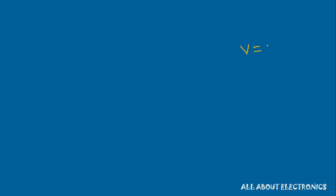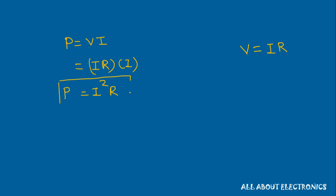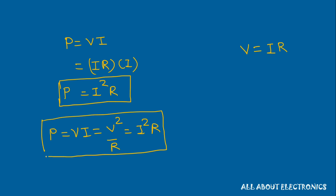We also know that voltage can be written as V = I × R according to Ohm's law. So the power P = V × I can also be written as (IR) × I = I²R. Therefore power can be defined as the product of voltage and current, or V²/R, or I²R.